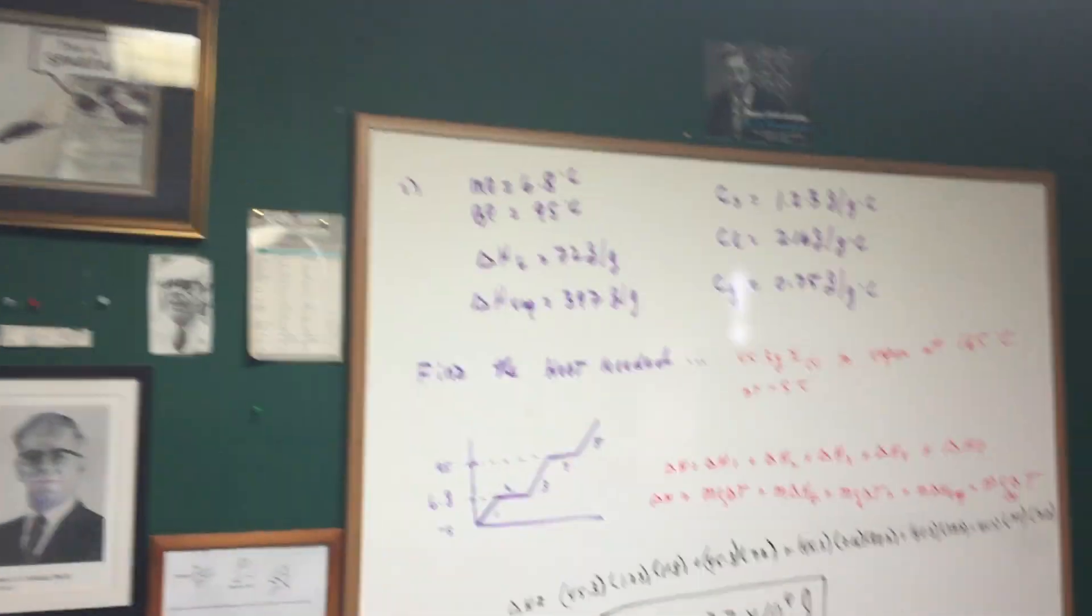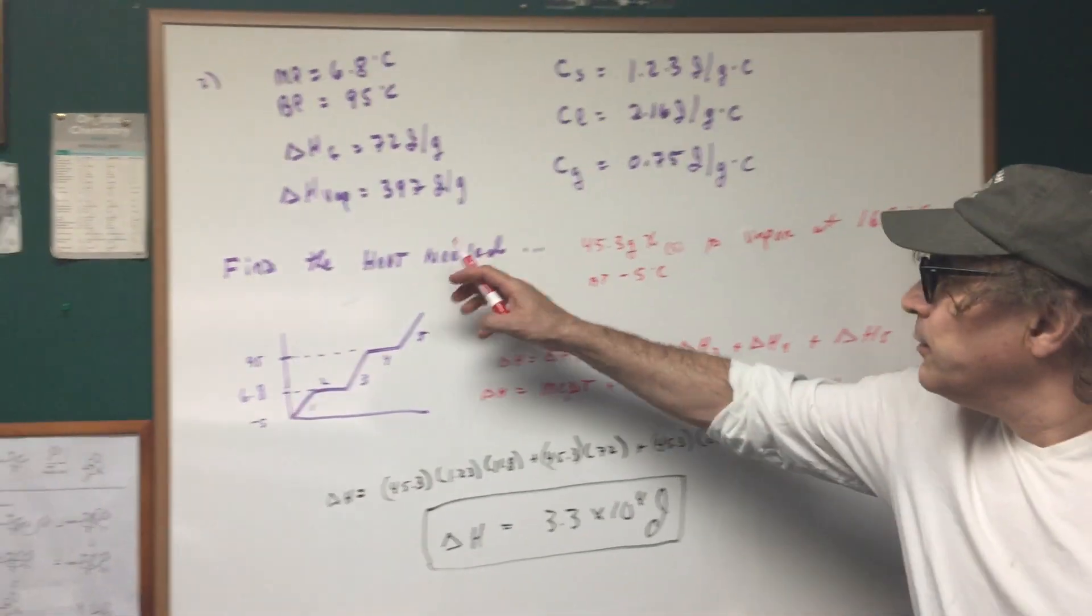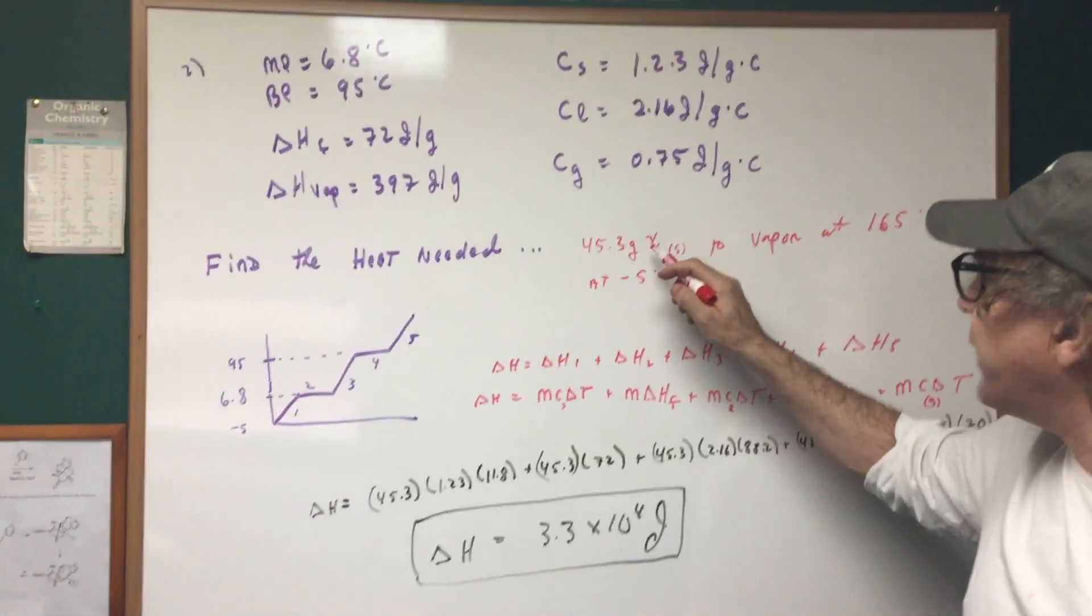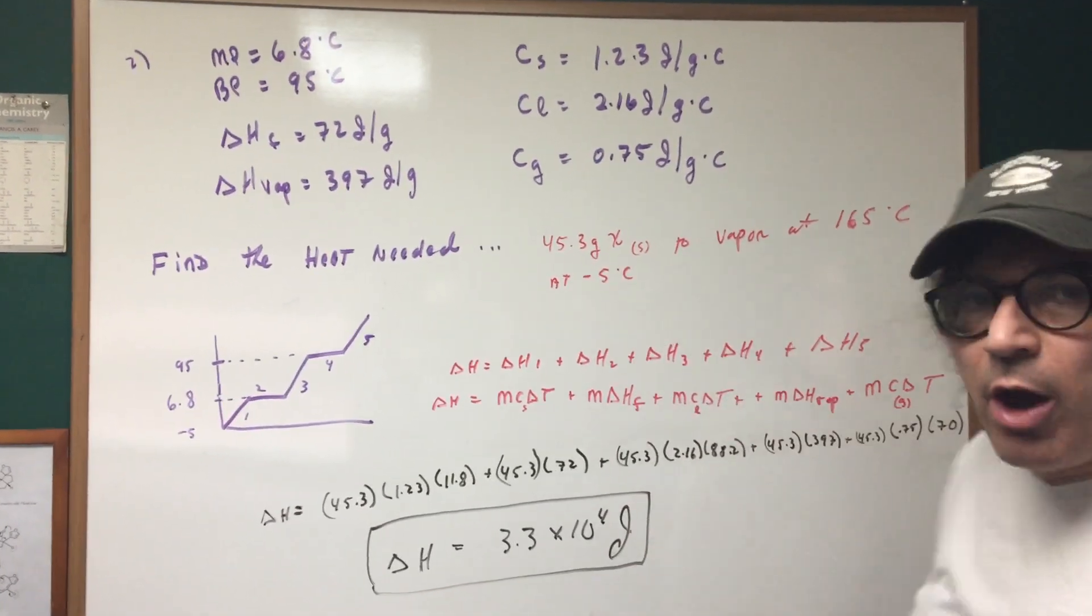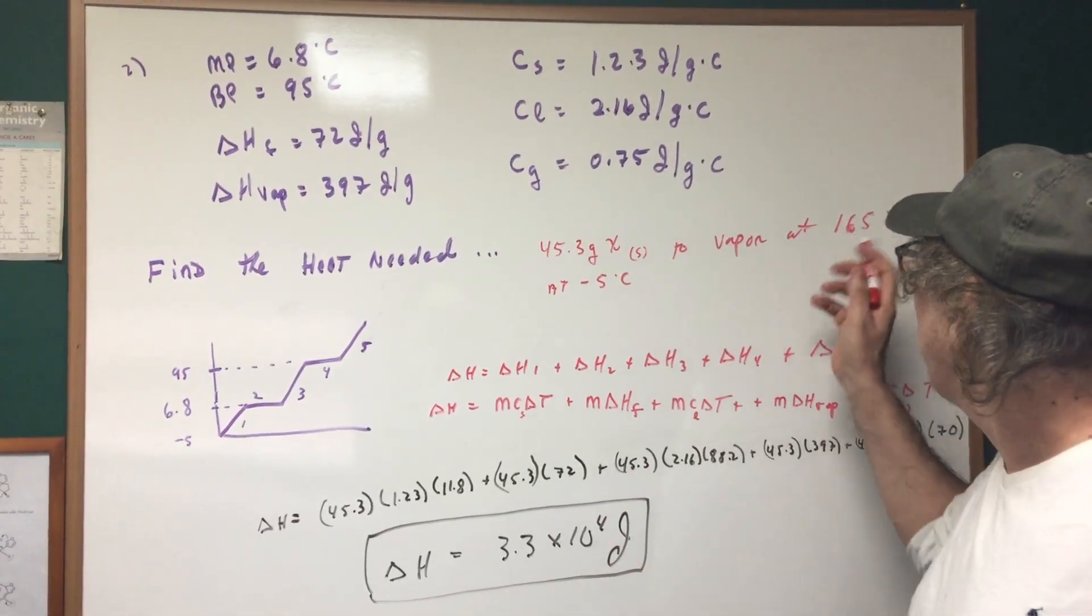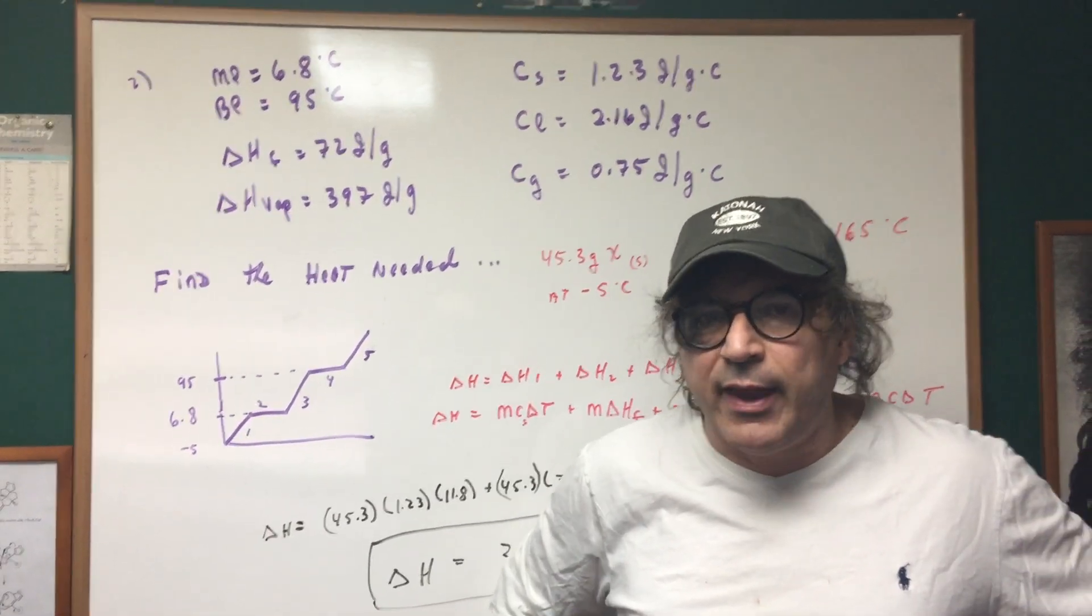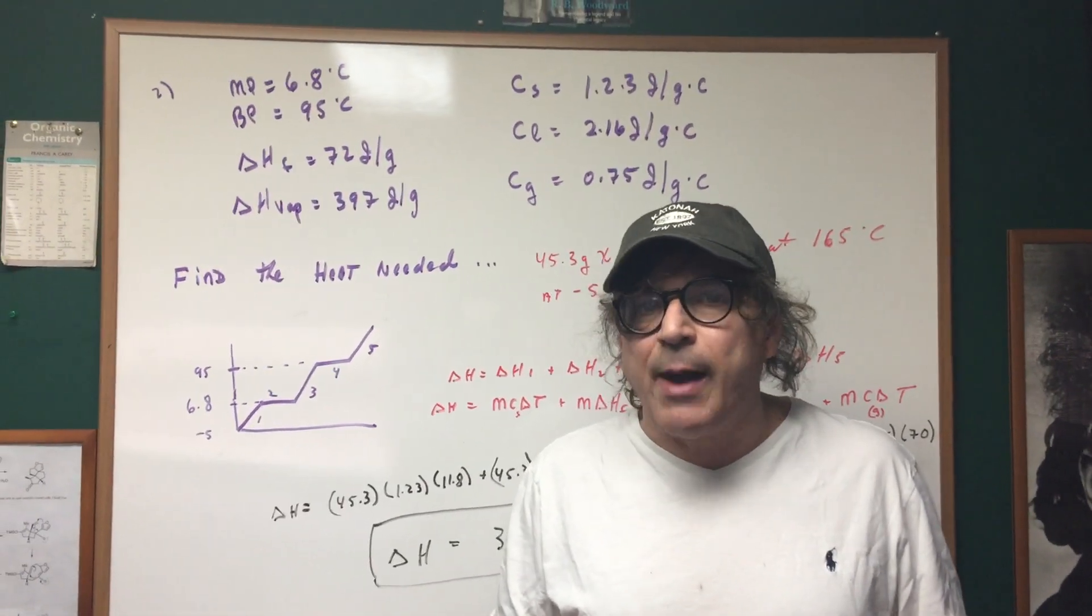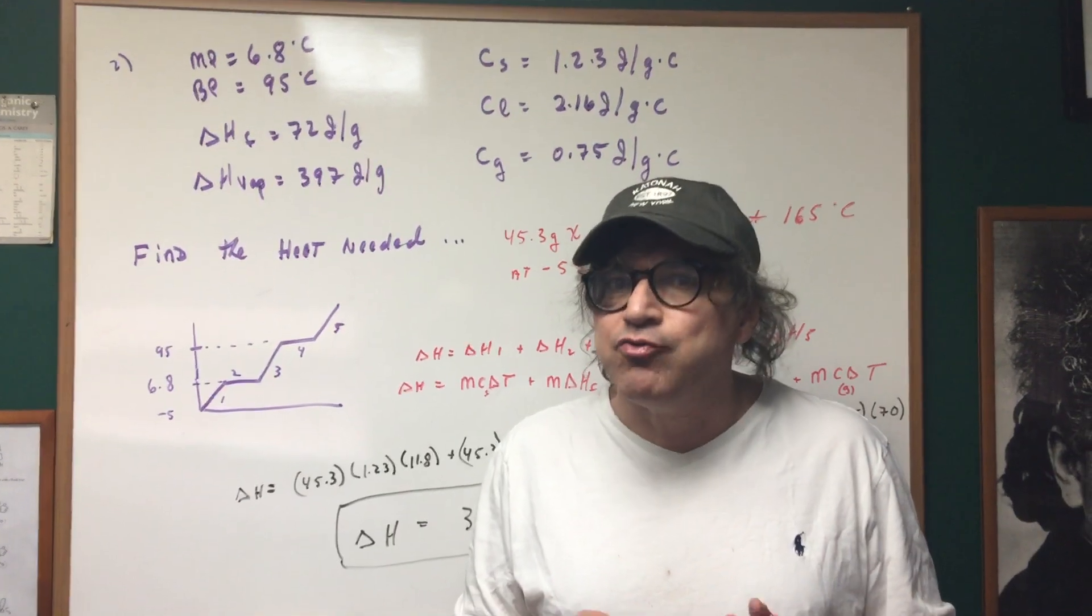Now part B of this question is as follows. We're going to find the heat needed to take that 45.3 grams of X which was the solid at negative five degrees and we're going to go all the way to the vapor phase at 165. I'll admit this is a little long for the DAT but I'll make a deal with you. As long as you can just set this problem up I think for the DAT you're fine unless the numbers will be really easy.